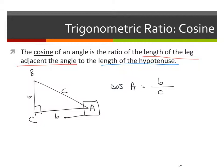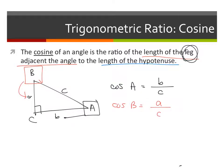Some of you might be thinking the hypotenuse C is also adjacent to angle A, but the hypotenuse in a right triangle will always be the hypotenuse. When we talk about opposite or adjacent, we're talking about the legs only. So cosine of B would be the ratio between the leg adjacent to B, which is a, over C, the hypotenuse. Cosine of theta is the adjacent leg over the hypotenuse.